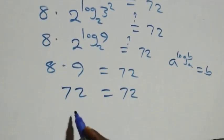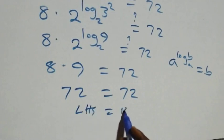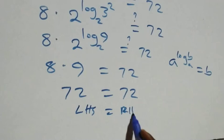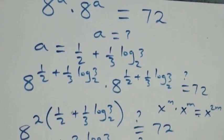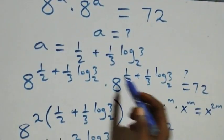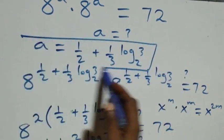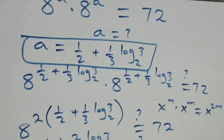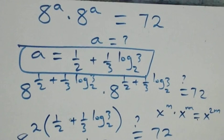The left hand side equals the right hand side, and we conclude that a equals 1/2 plus (1/3)log₂3 satisfies this given problem. Thank you for watching us here at Master T Math Class — don't forget to subscribe for more videos, turn on notifications, share this video, and leave your comments. See you next class!